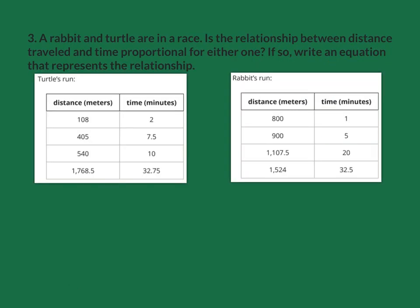Next, we've got a rabbit and a turtle in a race. We want to know is the relationship between the distance traveled and the time proportional for either of them. If so, write an equation to represent that relationship. We're looking for a constant of proportionality between each of these.